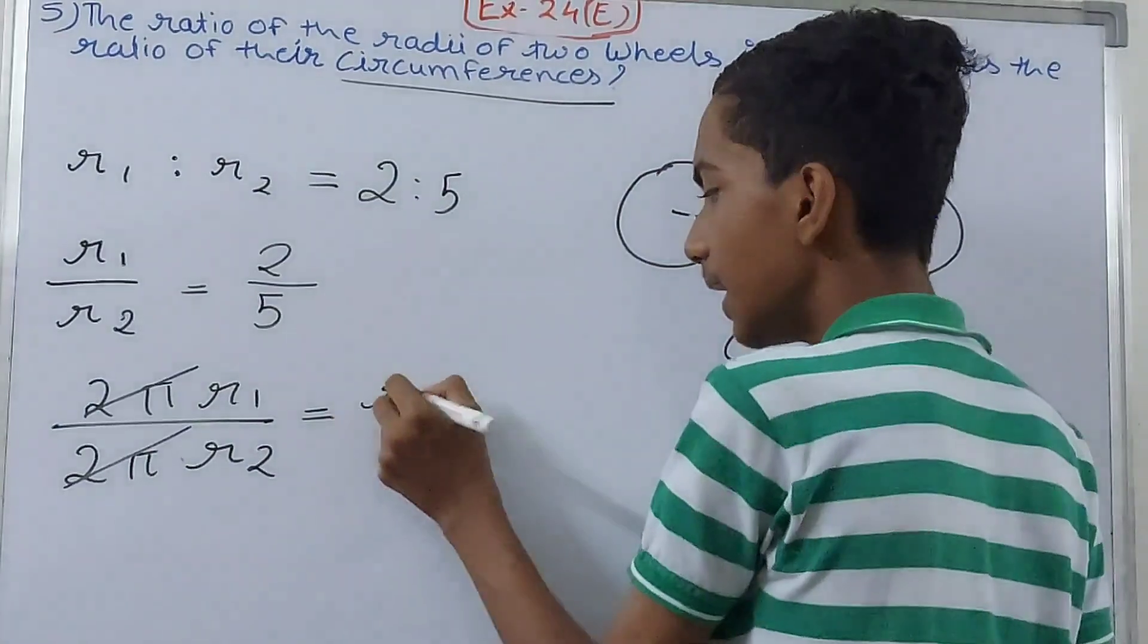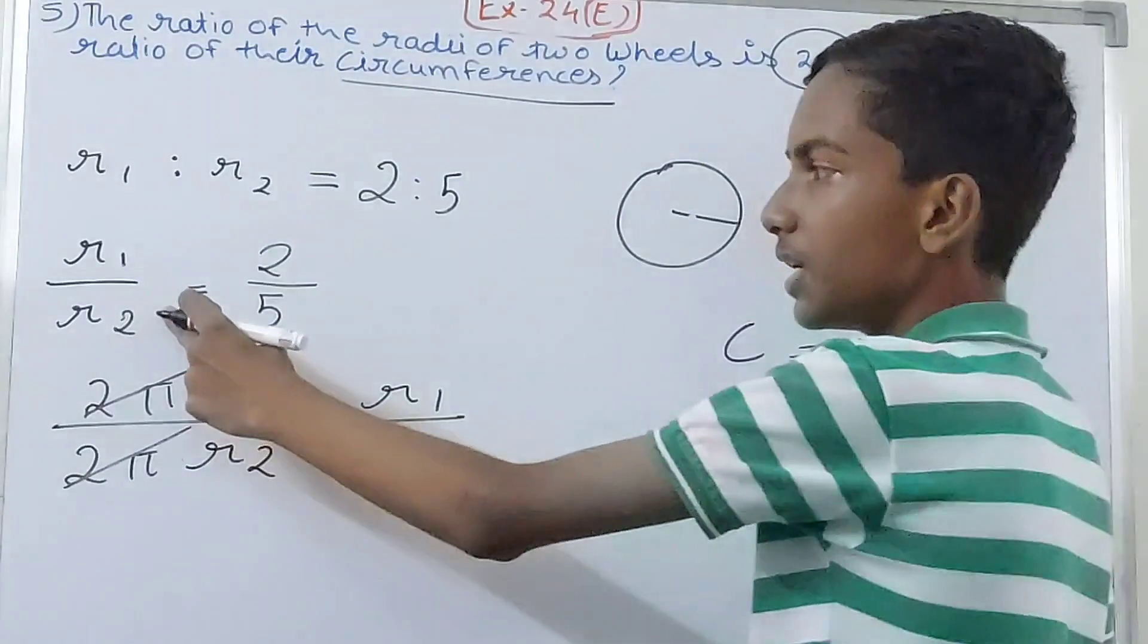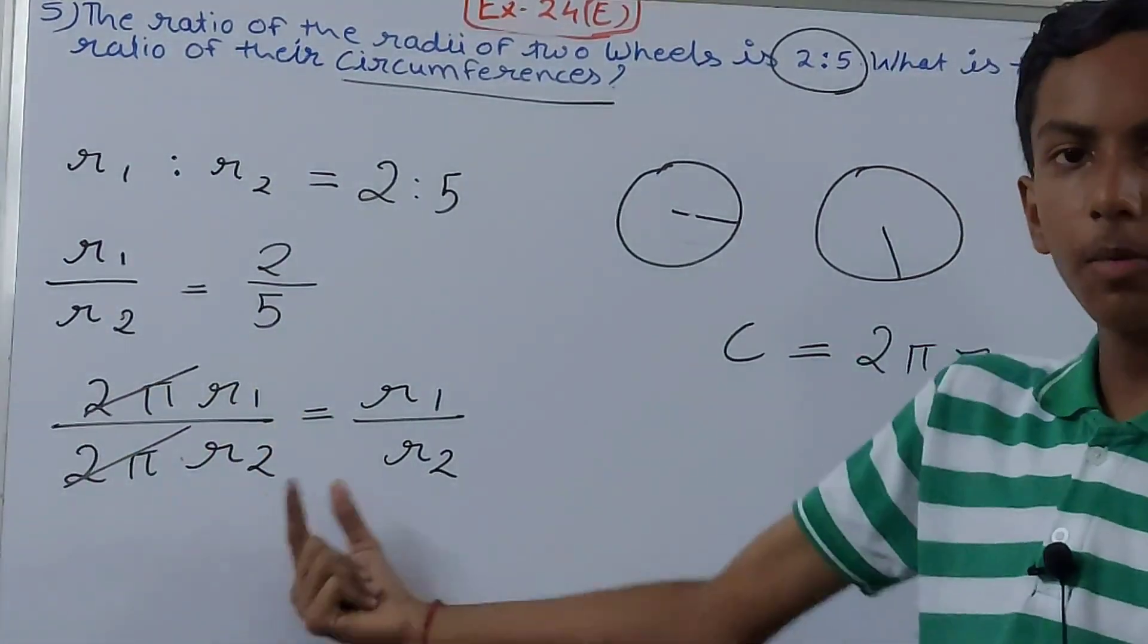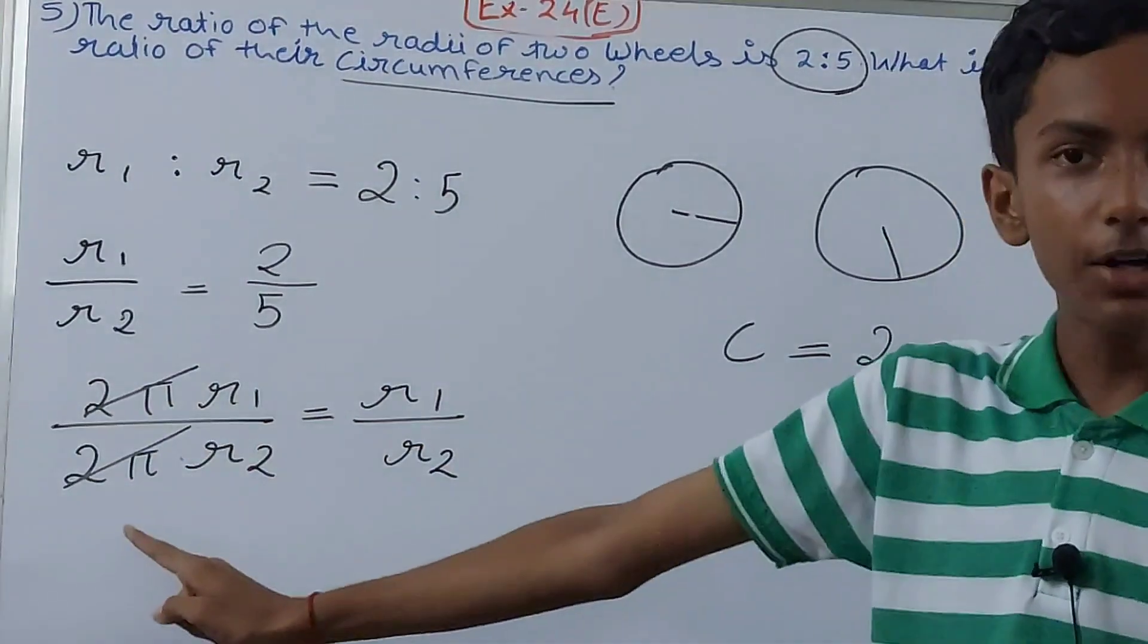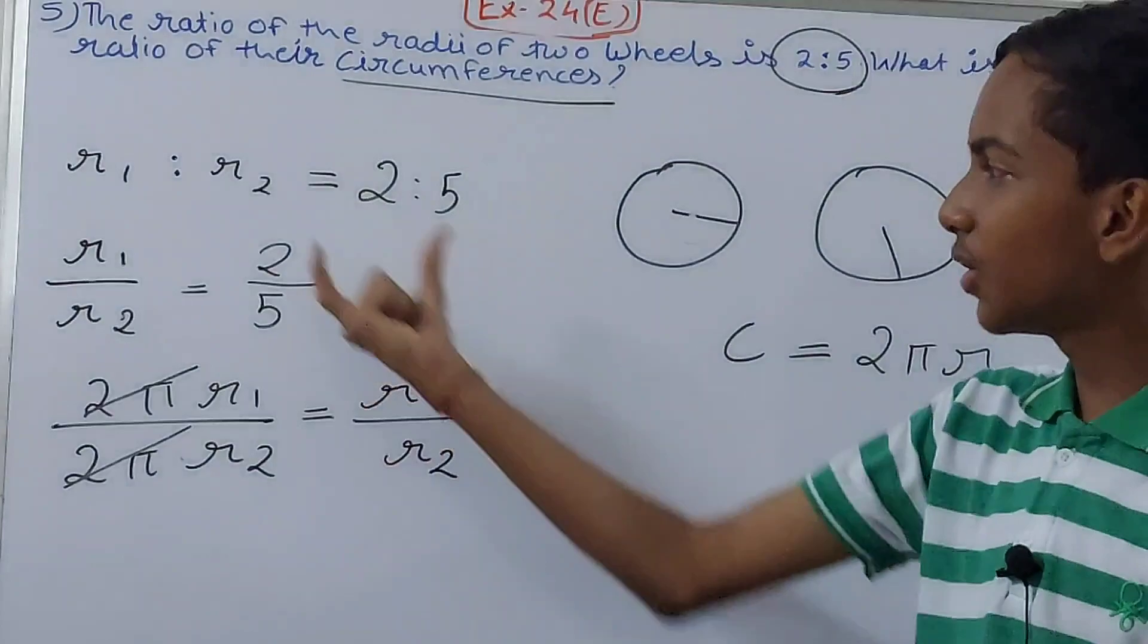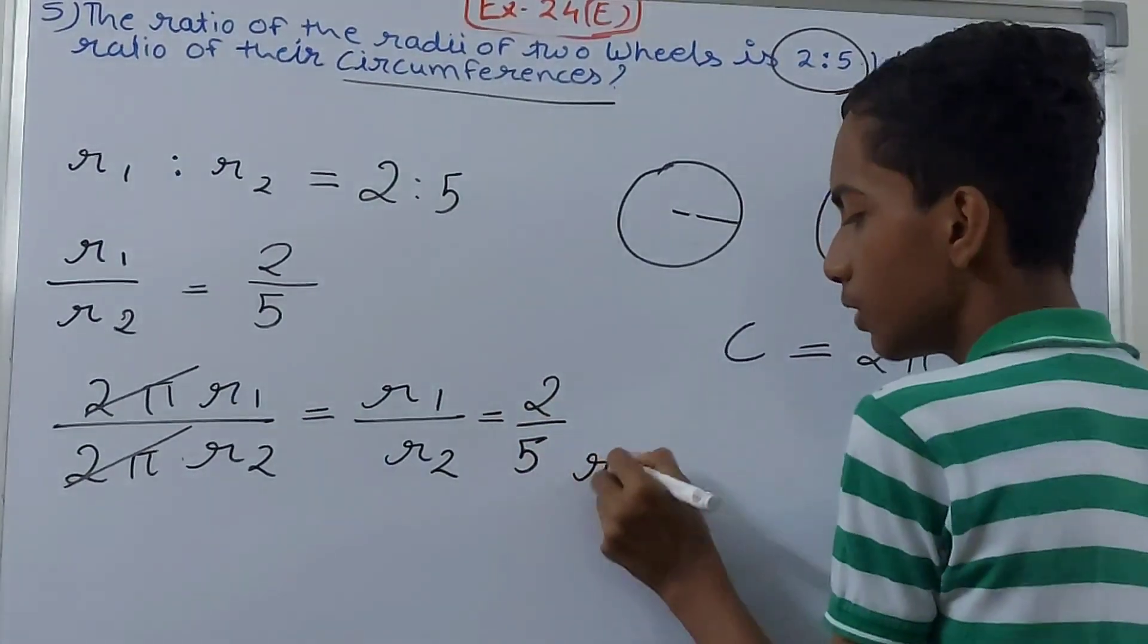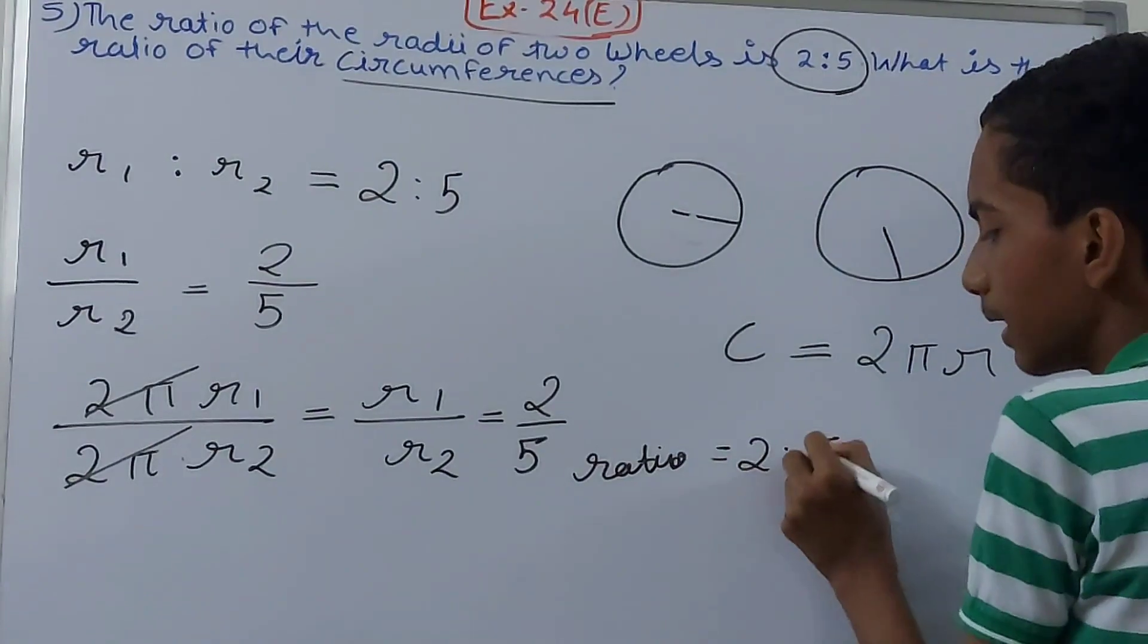What will this give us on the other side? Simply cancel this 2π, cancel this 2π. So what we are left with in the end is radius one upon radius two only. We have converted it into circumference one upon circumference two, that is 2πr1 upon 2πr2. Cut 2π because it is common. What we get in the end is r1 upon r2, which is two upon five. So the ratio becomes two is to five.